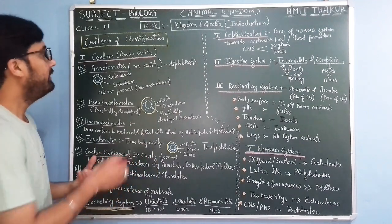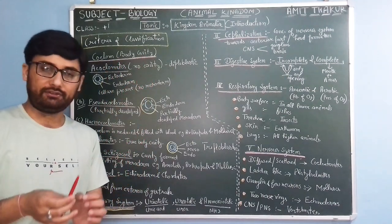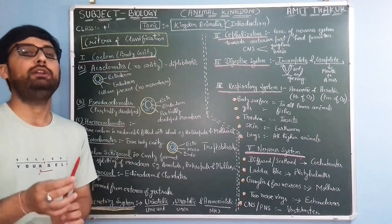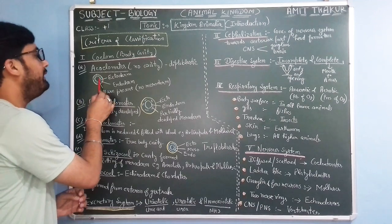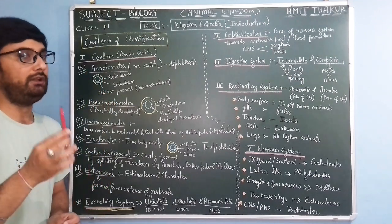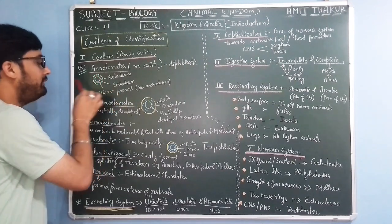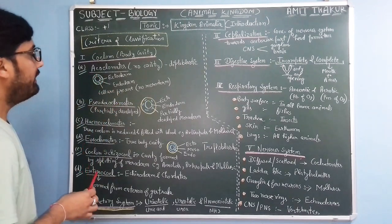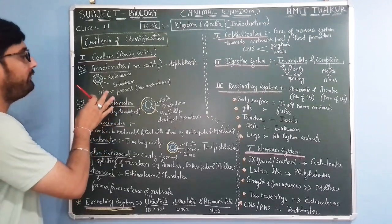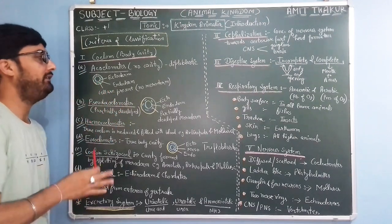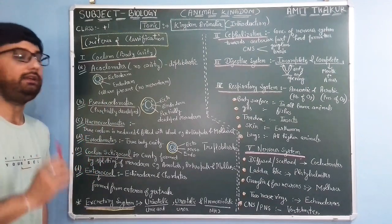Acoelomate means when there is no body cavity. They are generally diploblastic, that means the presence of only two germ layers — only outer ectoderm and inner endoderm layer. There is no mesodermal layer; there are some cells present in the middle part but no mesoderm. So they are generally diploblastic, with two germ layers — ectoderm and endoderm — and they are acoelomates.